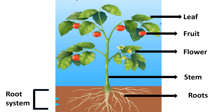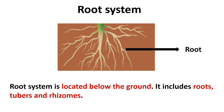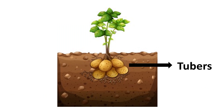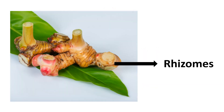A plant can be divided into two systems. The first one is the root system. The root system is located below the ground. It includes roots, tubers, and rhizomes.